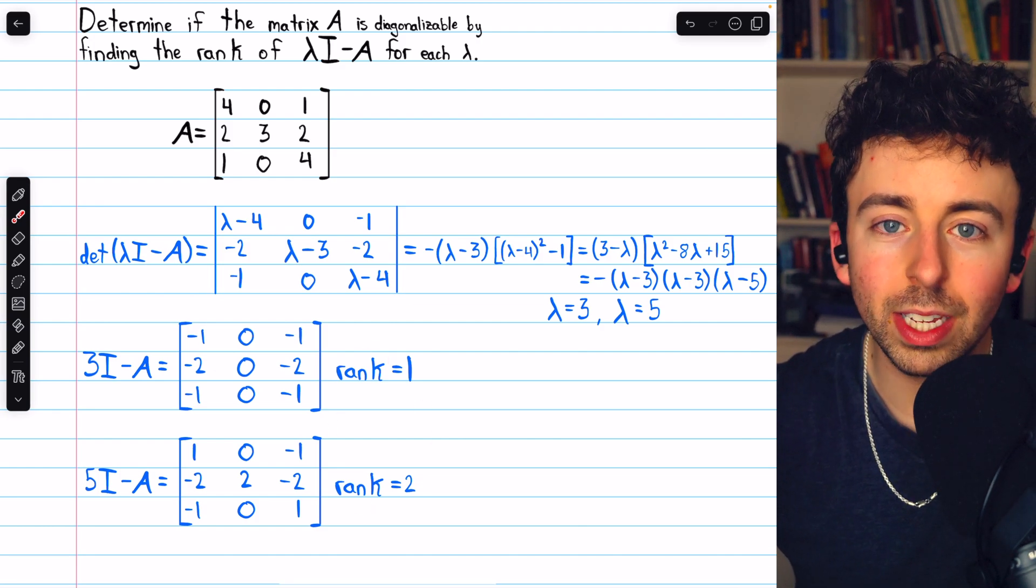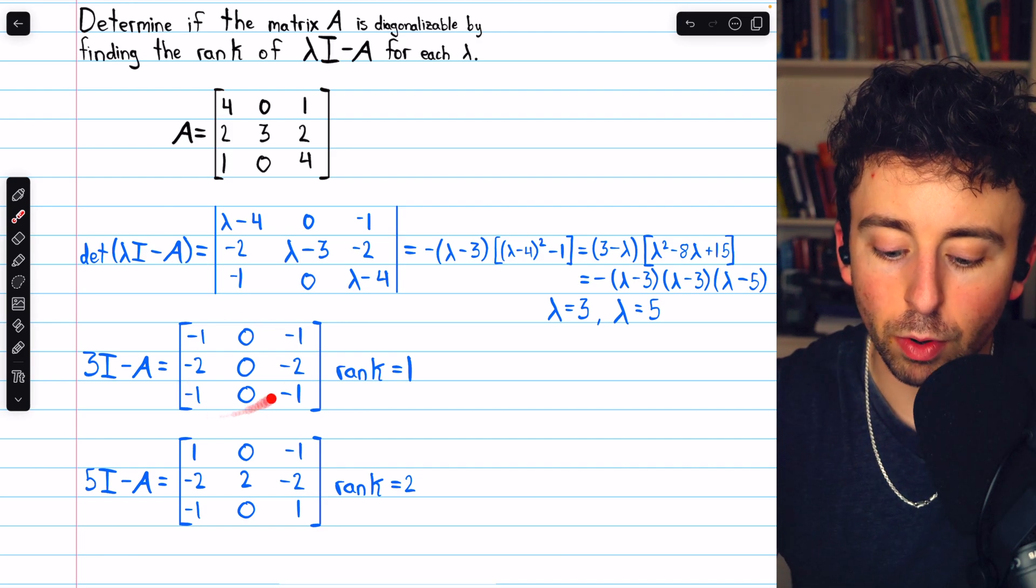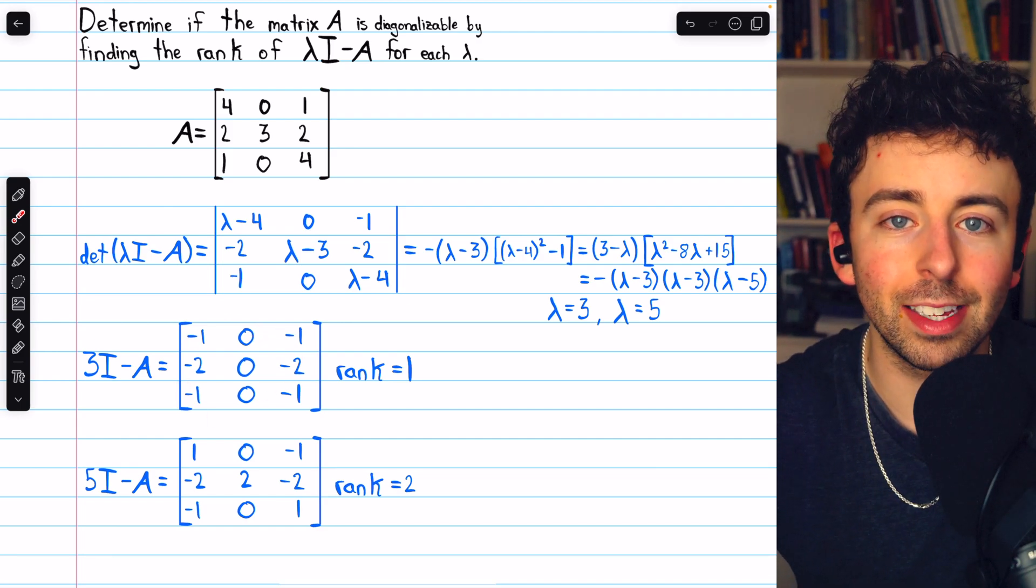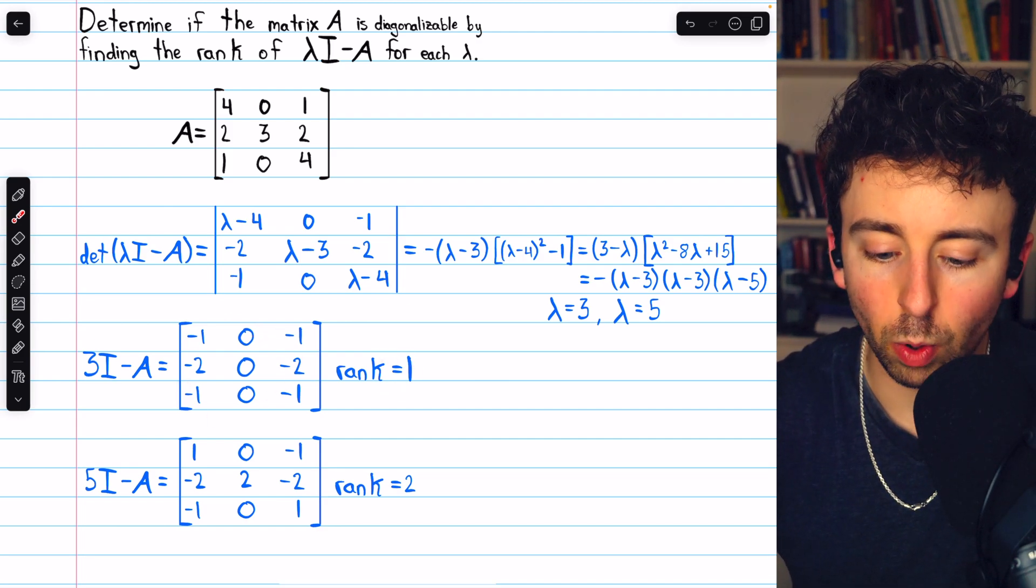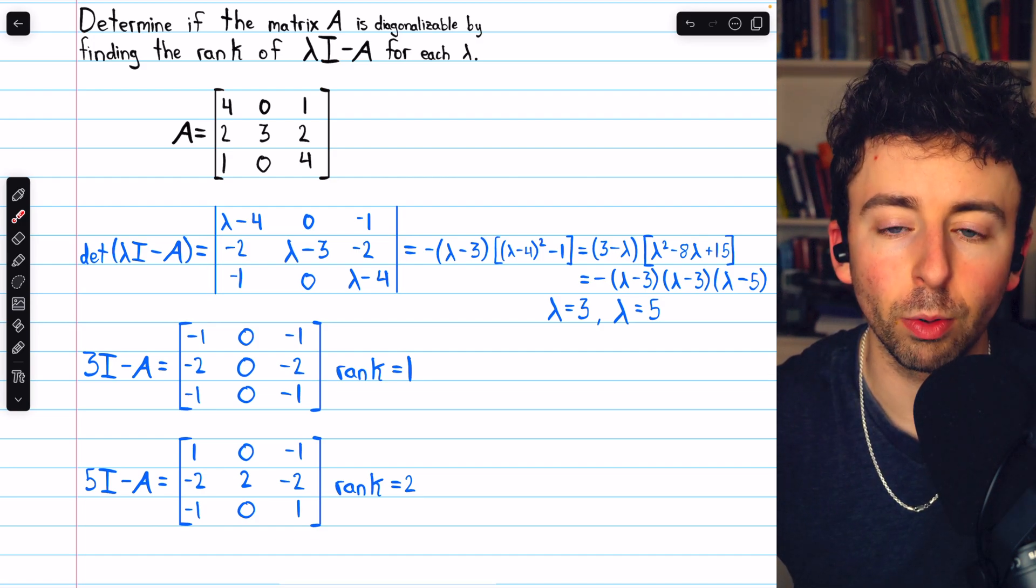And from the rank, we can easily determine the nullity. This is a 3 by 3 matrix, and rank plus nullity must equal n. So if the rank is 1, the nullity must be 2. So 2 plus 1 is 3.